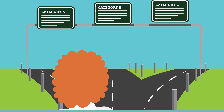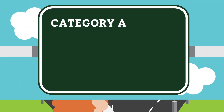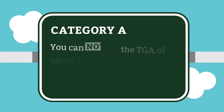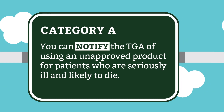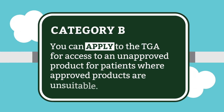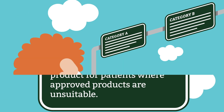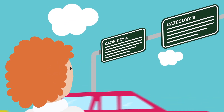If you decide to apply for access to medicinal cannabis under the SAS, you'll need to know which category to use. Under SAS Category A, you can notify the TGA of using an unapproved product for patients who are seriously ill and likely to die. Under SAS Category B, you can apply to the TGA for access to an unapproved product for patients where approved products are unsuitable. If both Category A and Category B are relevant to your patient, Category B is likely to provide faster access.